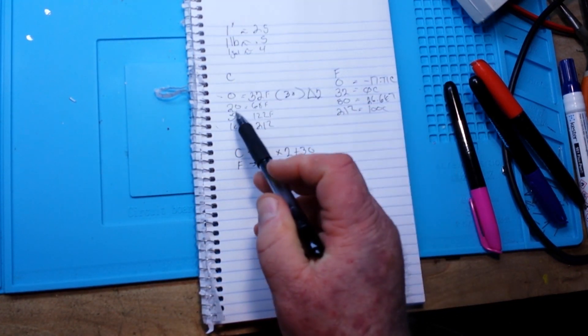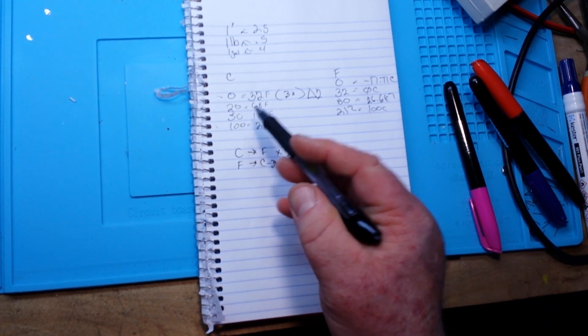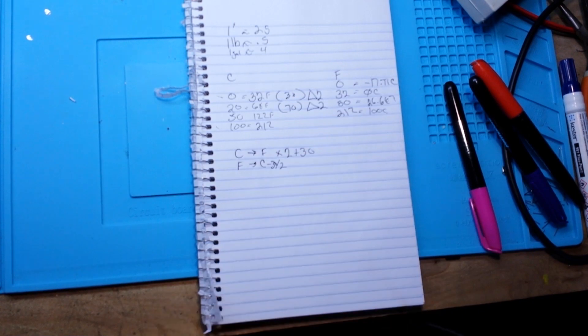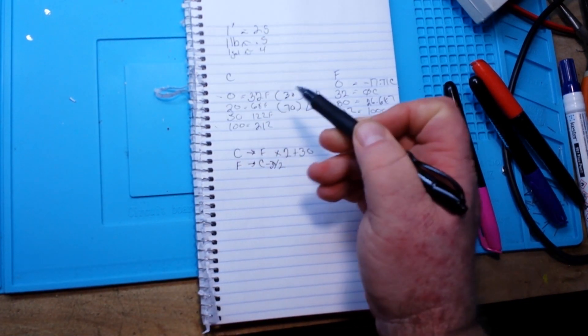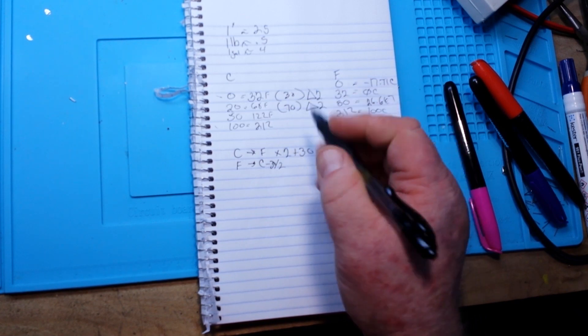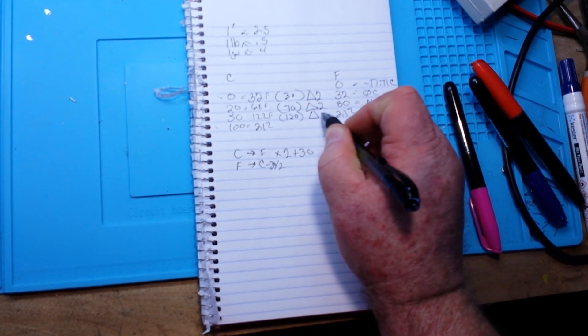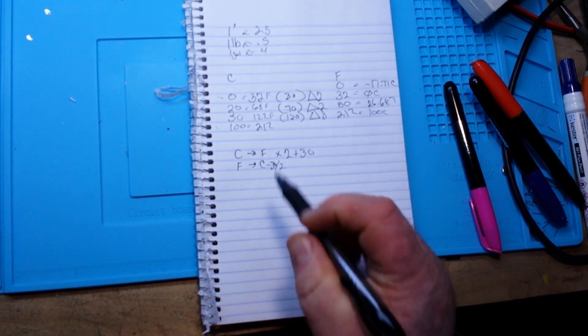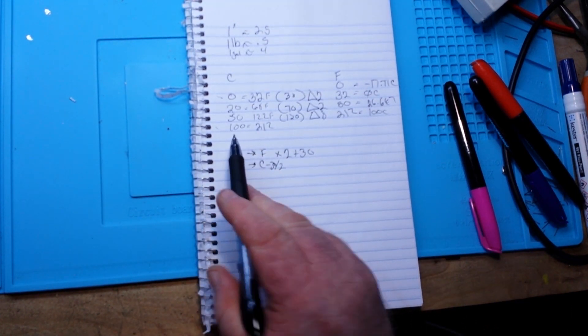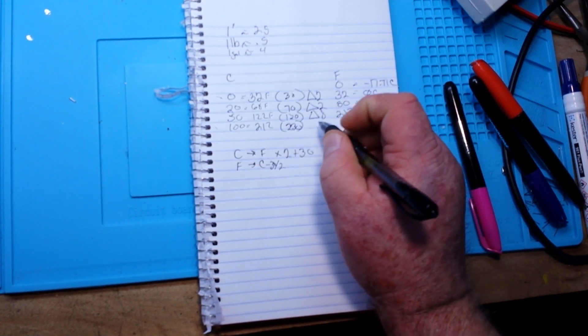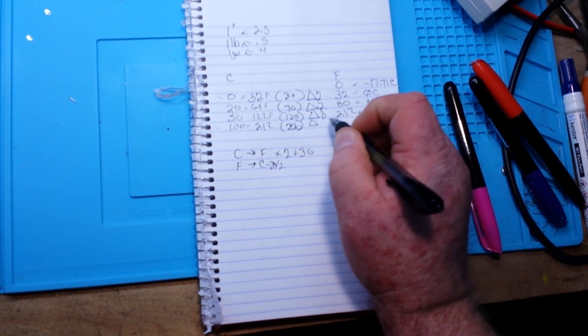20 degrees, 20 times 2 is 40 plus 30 is 70. Again we have a difference of 2 degrees, should climb as we get higher. 50 times 2 is 100 plus 30 is 130, and now you see our delta's changed to 8. 100 times 2 is 200 plus 30 and we get 230, which is a delta of what, 16, 17.